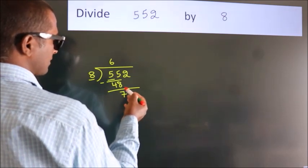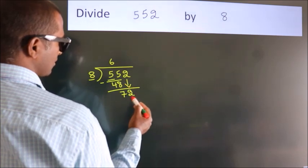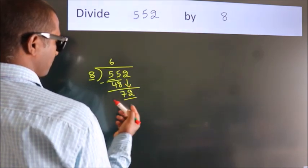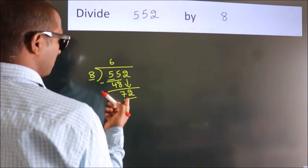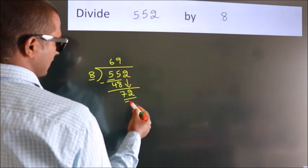After this, bring down the beside number. So 2 down, giving us 72. When do we get 72? In the 8 table, 8 times 9 is 72.